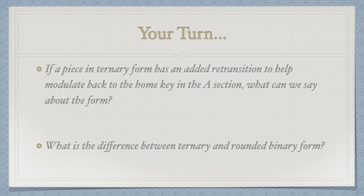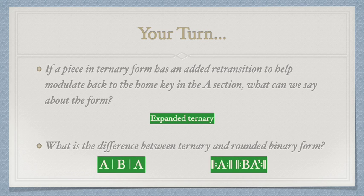The answer to the first question: if we add any part to our ternary form, we have expanded it — so it's an expanded ternary. Try not to confuse compound and expanded, as these terms mean different things. For the second question, the reprise of A at the end of rounded binary is significantly shorter than it is in ternary form. Also, the A and B sections will often share motives, keys, rhythms, etc. in rounded binary, whereas the B section in ternary is often drastically contrasting and definitely its own portion of the form.